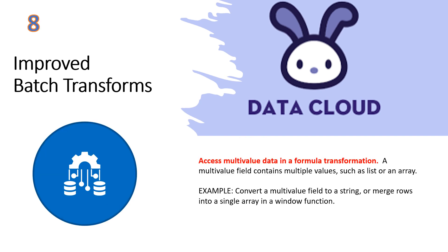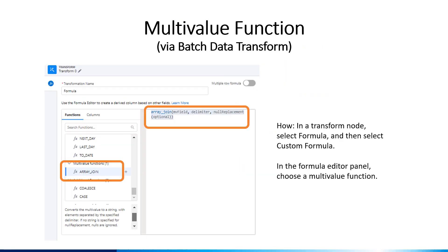Batch transforms has also been improved. It's now possible to access multi-value data in a formula transformation within a batch transformation. In a transform mode, select formula and then select custom formula. In the formula editor panel, choose a multi-value function like the array join function shown here.